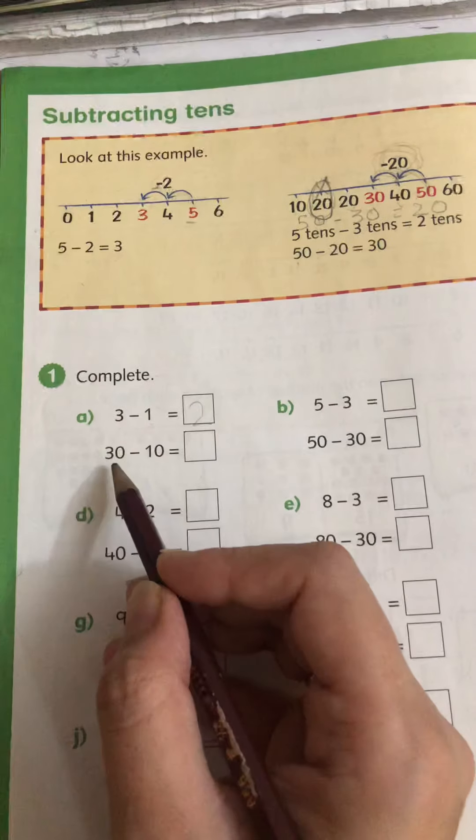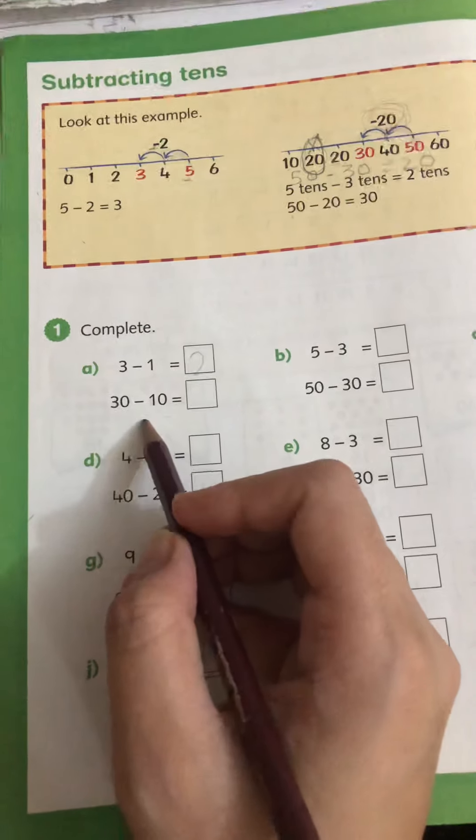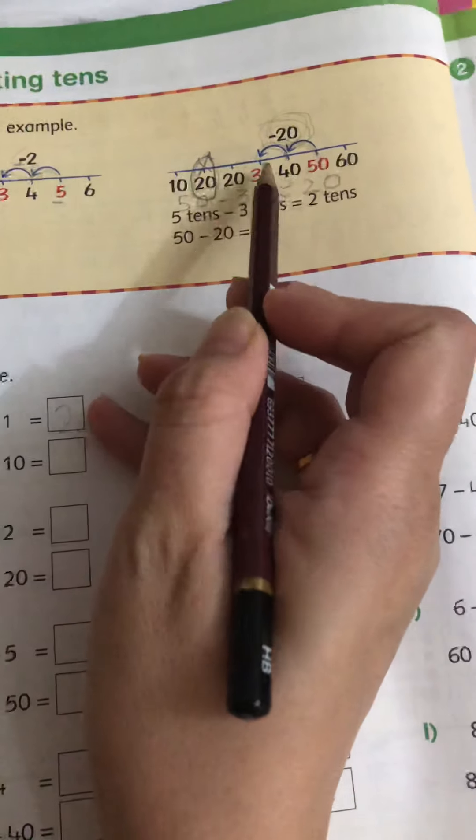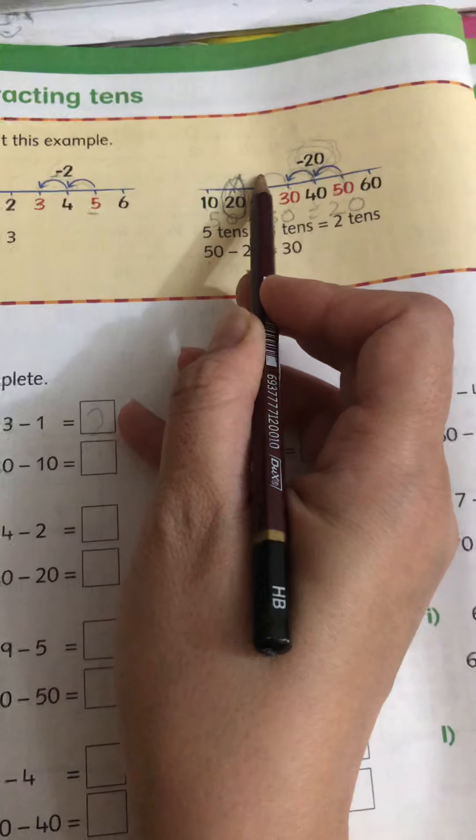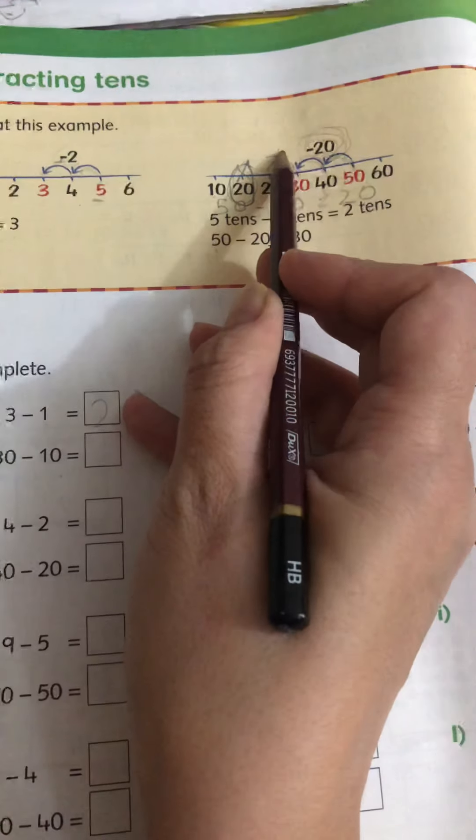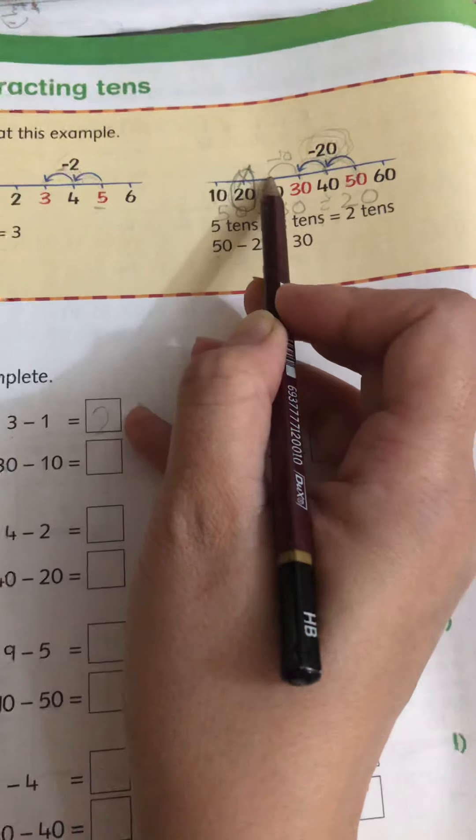The same way we can do 30 minus 10. We can do either by using number line. We can do 30 take away 10. So if we take away just 10, means 1 ten or minus 1 ten, we will land on 20.